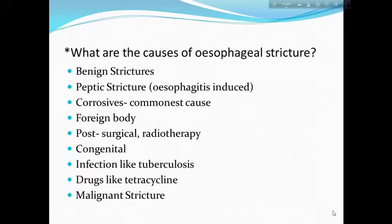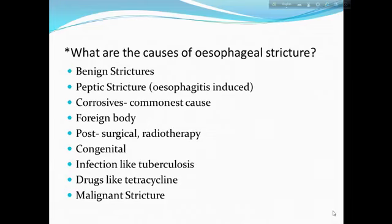What are the causes of esophageal stricture? The most common causes are benign stricture, peptic stricture, and corrosive stricture. Other causes include foreign body, post-surgical or post-radiotherapy stricture, congenital causes, infection like tuberculosis, drugs like tetracycline, and malignant stricture.